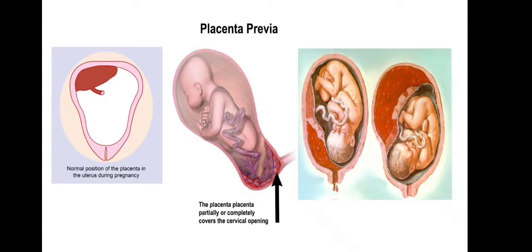In abruptio placenta, the placenta is located in the upper segment normally, but its membranes are detached from the uterine wall, which causes bleeding. If the bleeding is visible outside it is revealed; if it is not seen it is a concealed case. Abruptio placenta is a different topic — we are only going to discuss placenta previa today.